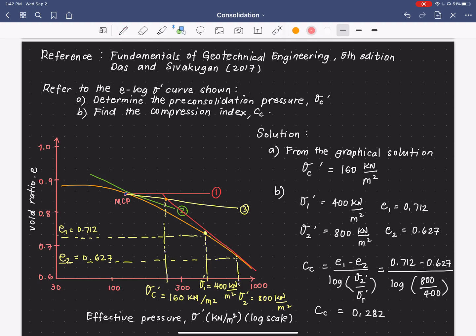Therefore, Cc is equivalent to 0.282. So, the final answer is 0.282. And for letter A, the final answer is 160.